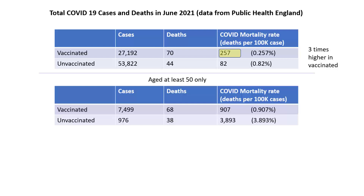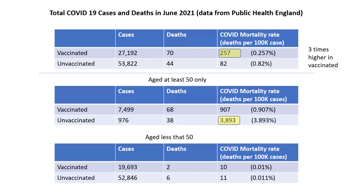In the 50-plus age category, where most deaths occur, many more were vaccinated than unvaccinated, and the mortality rate is actually four times higher in the unvaccinated group. Even in the under-50 age category, where there were very few deaths and most people were unvaccinated, the mortality rate is again slightly higher in the unvaccinated group. So although in the aggregate data the mortality rate among the vaccinated was over three times higher, in each subcategory the mortality rate was higher in the unvaccinated.